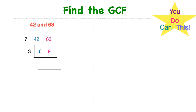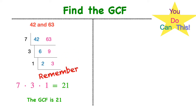I draw my ladder and continue down: 3 times 2 is 6, and 3 times 3 is 9. Then I look at 2 and 3, and they only share a common factor of 1. So my greatest common factor is found by multiplying those shared factors on the left — 7 times 3 times 1 is 21. The greatest common factor of 42 and 63 is 21. And 21 is less than 42 and less than 63, so I know I'm good.